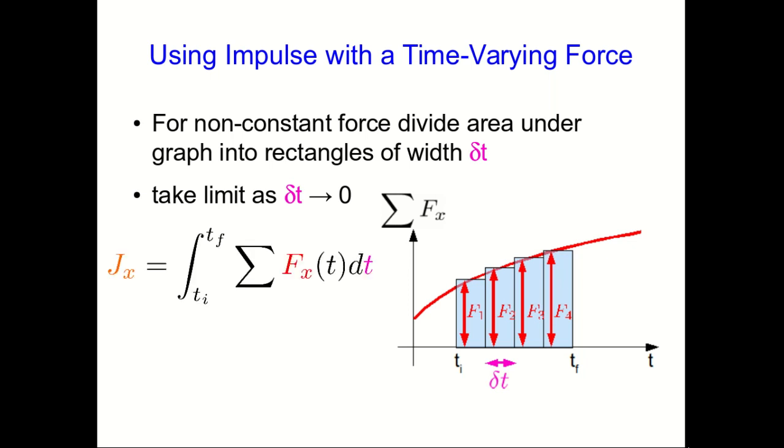And so we get our x component of the impulse as an integral of the x component of the vector sum of forces with respect to time. Or we can just define the vector then as the integral of the vector sum of forces itself with respect to time.